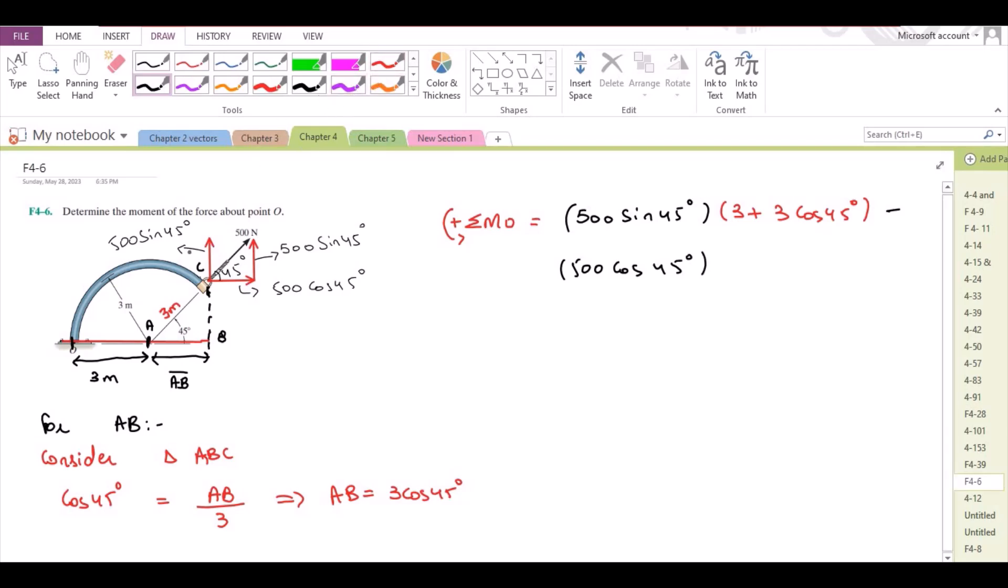The moment arm for this horizontal force - if I draw its line of action - the moment arm for this horizontal force component would be this perpendicular distance. From the given diagram we can clearly see that this perpendicular distance is same as the length BC.